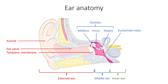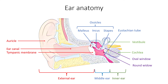Inner ear is composed of cochlea and vestibule. Vestibule is responsible for balance, but this is covered in a separate video. Finally, there are two openings from the middle ear to the inner ear: oval window, to which stapes is attached, and round window, right underneath.